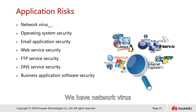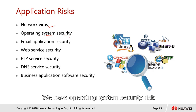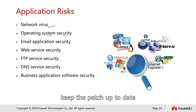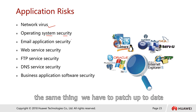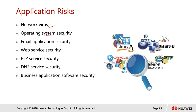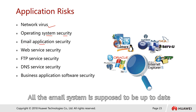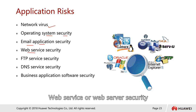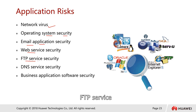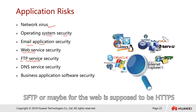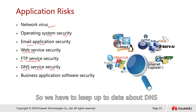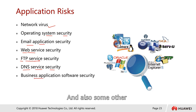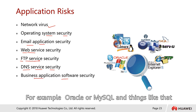Application risk covers many areas: network viruses, operating system security — where patches must be kept up to date for Windows Server, Windows 10, Linux, and macOS — email application security, web server and web services security, FTP services (which should now be replaced with SFTP), web services (which should use HTTPS only), DNS security, and business application software security such as Oracle or SQL.